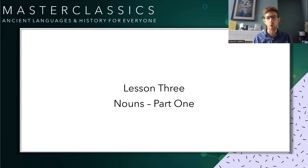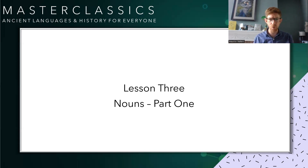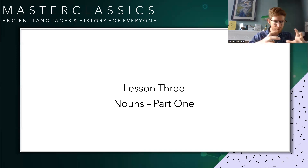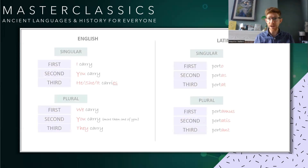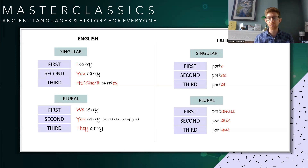Nouns are fantastic words. They are essentially what we call things — how we label things. They're objects, things, people. They are really important to the way a language works because they're the substance behind what's going on. Verbs are all about action; nouns are all about things or stuff.